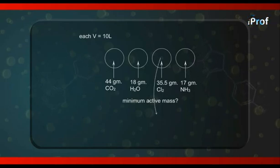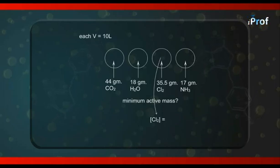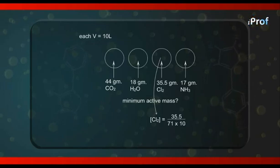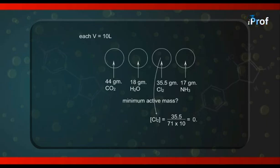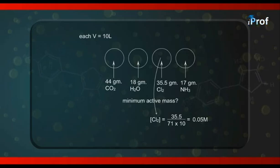The active mass of chlorine is 35.5/71 × 1/10. Remember, 35.5 is the atomic weight of chlorine and its molecular weight is 71. So the active mass equals 0.05 mole per liter (written as 0.05 M). The active mass of chlorine is the least among all four vessels, making it our answer.